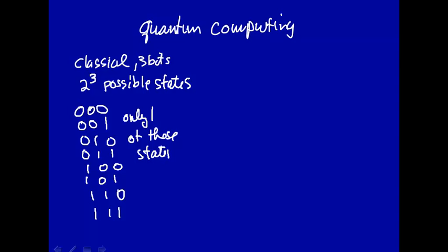So a classic computer can be in only one of these states. So you have like a memory or a register in a CPU. It can be only one of these states at a time.